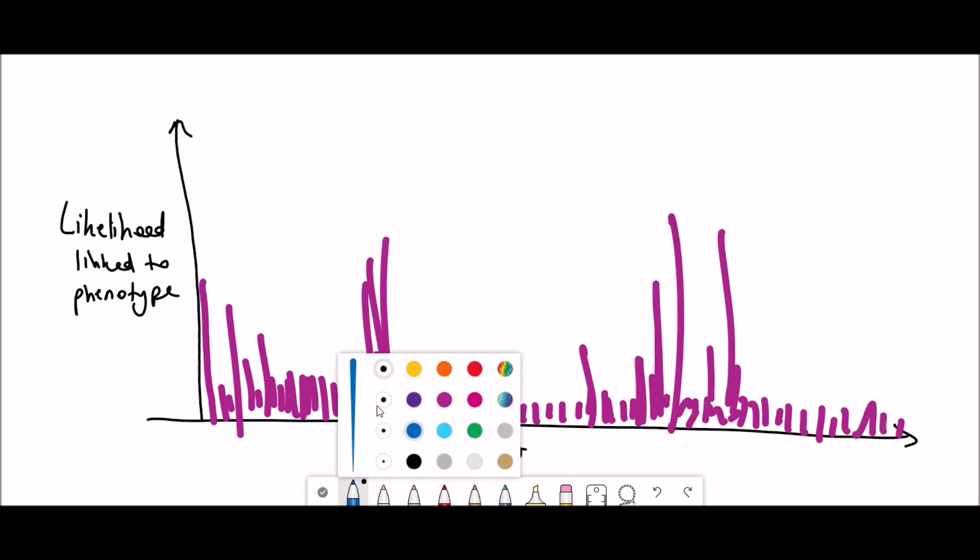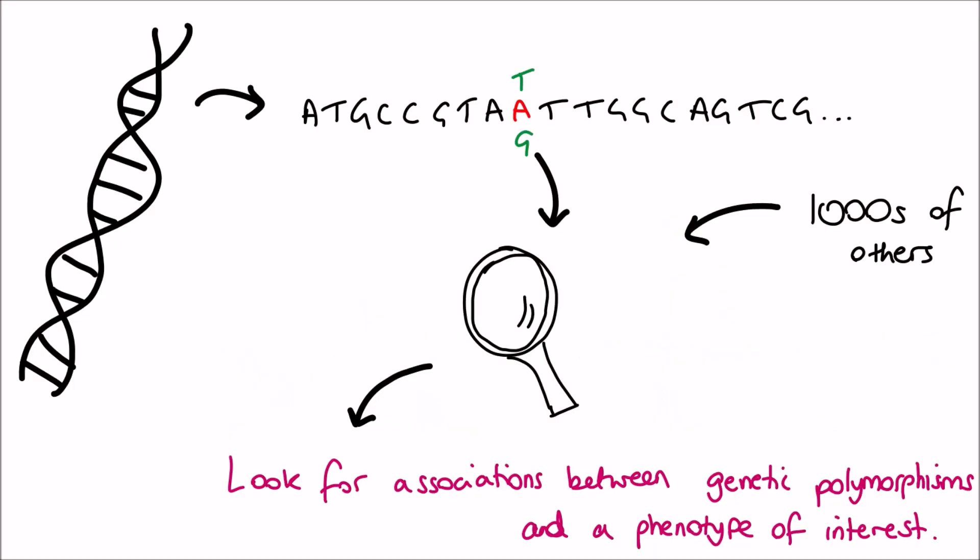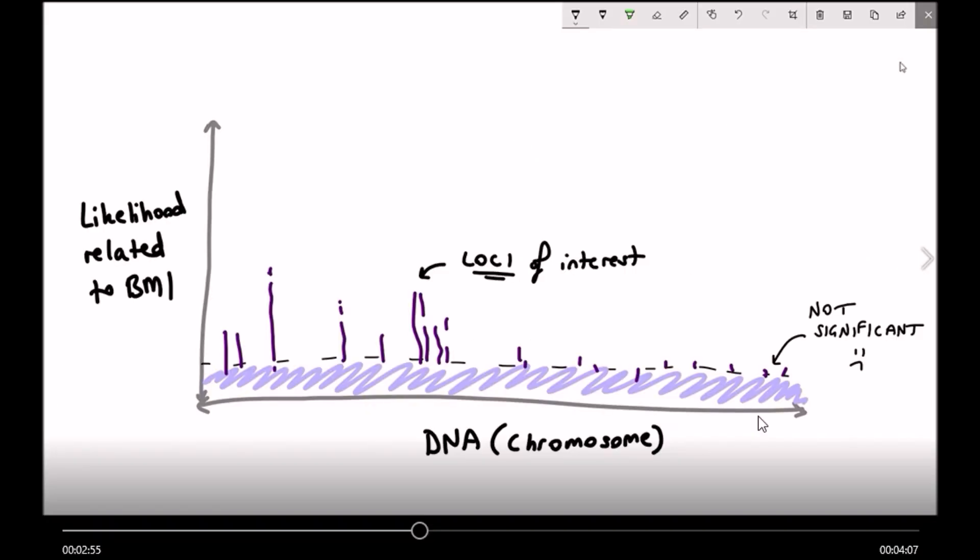If you do this across the entire genome, you'll find that certain loci are more likely to be associated with that phenotype than others. Ones that surpass the threshold are of interest because it suggests that is a loci where there is a correlation between having that genetic variant and the trait.